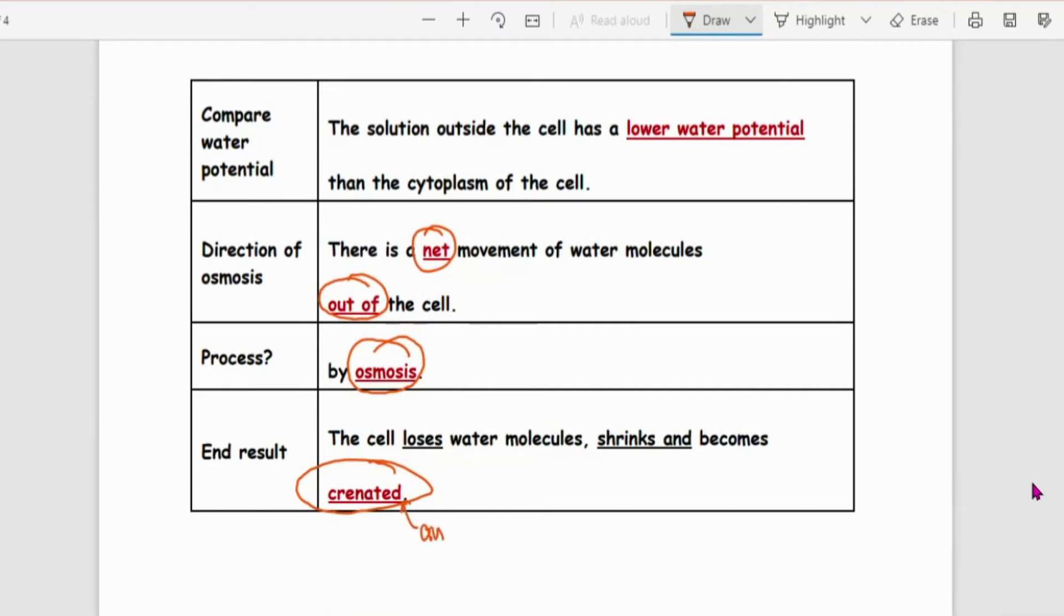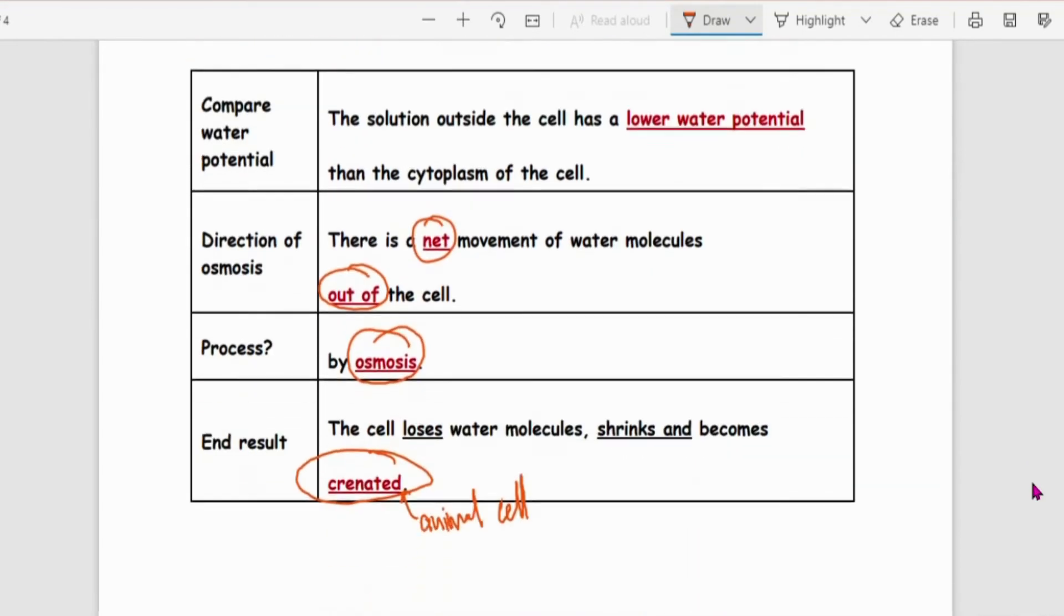Do take note. This is for the animal cell. But at least do not anyhow use the word Crenated for any type of cells. It's only when the animal cell has shrunk, it has this kind of spikes here. We call it Crenated.